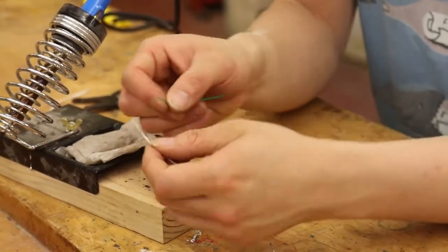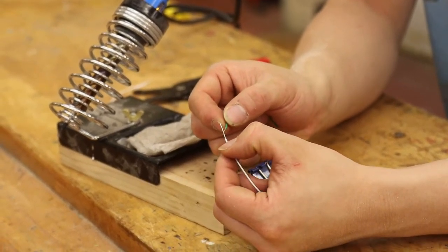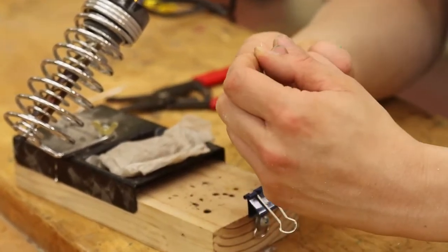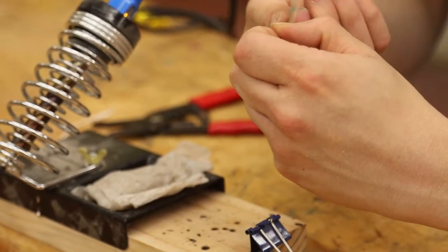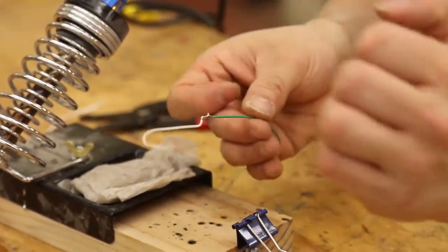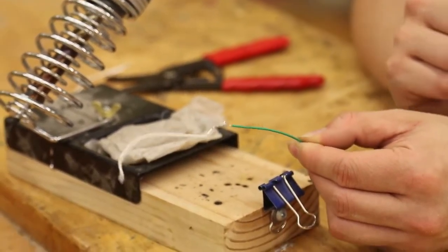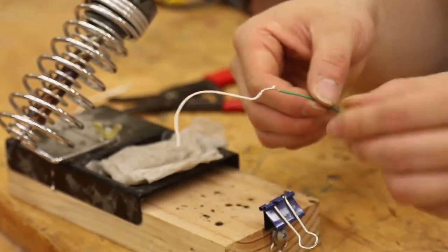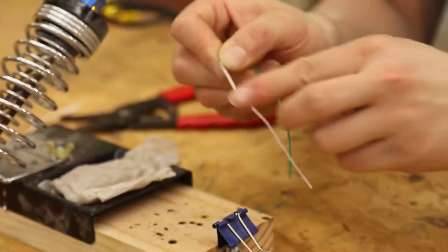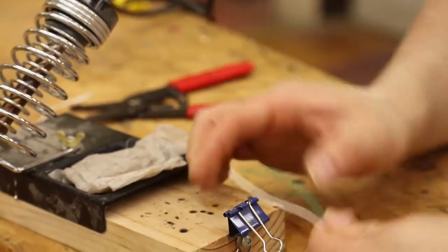As the soldering iron is heating up, it's a good idea to get the two pieces joined mechanically. So I'm just going to take these two pieces of wire, I'm just going to twist them together so they hold in place. You've done a good job when it kind of stays together.